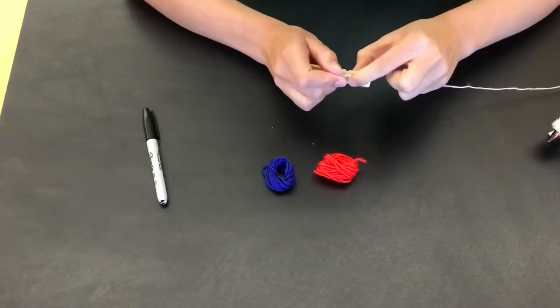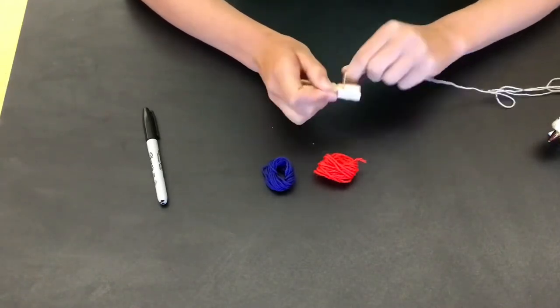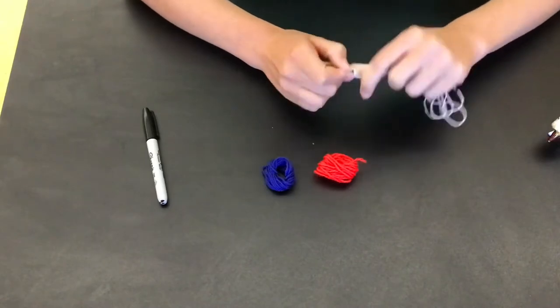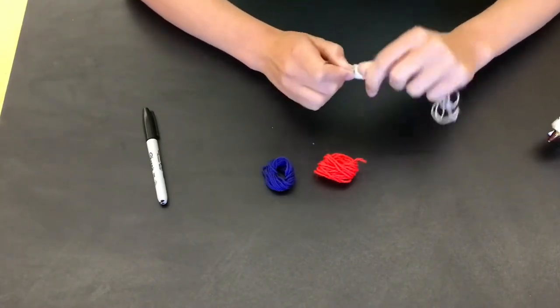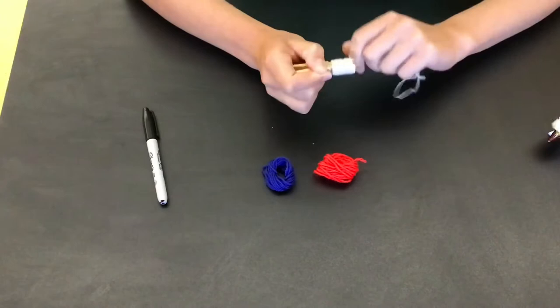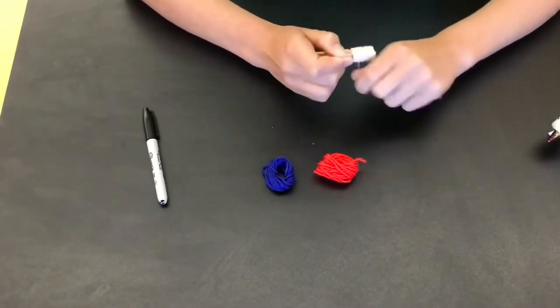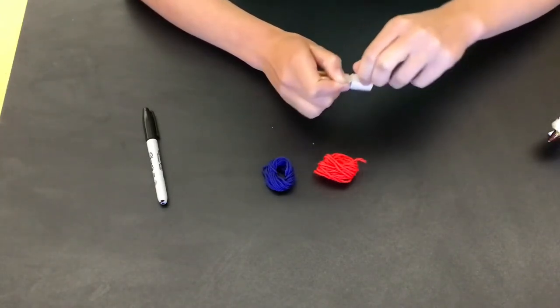You're going to keep wrapping your light thread all the way around. Keep wrapping it around the clothespin until you get down to the little indent in the clothespin. It's where the metal piece attaches to. It's just like a little divot in it.